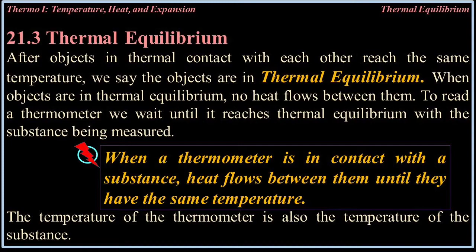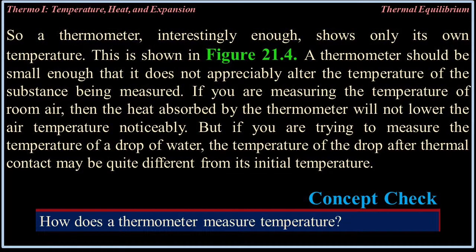21.3 Thermal Equilibrium: After objects in thermal contact with each other reach the same temperature, we say that the objects are in thermal equilibrium. When objects are in thermal equilibrium, no heat flows between them. To read a thermometer, we wait until it reaches thermal equilibrium with the substance being measured. When a thermometer is in contact with a substance, heat flows between them until they have the same temperature. The temperature of the thermometer is also the temperature of the substance. Interestingly, a thermometer shows only its own temperature.